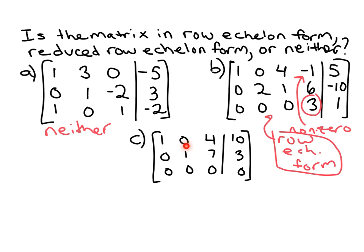The pivot here, everything else in that column is zero. So this third example is in reduced row echelon form or RREF.